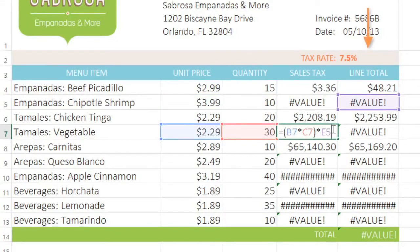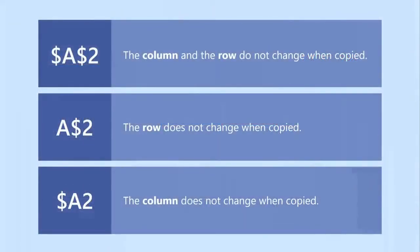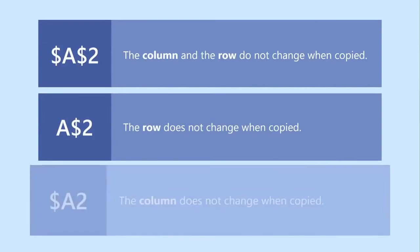We want it to stay frozen on E2 for each copy of the formula, and for that we'll need to use an absolute reference. Absolute references have a dollar sign placed before the column, row, or both to keep them from changing when you copy the formula to another cell. To keep the column and the row from changing, place a dollar sign in front of both. To keep only the row from changing, place a dollar sign in front of the row only. To keep only the column from changing, place a dollar sign in front of the column.